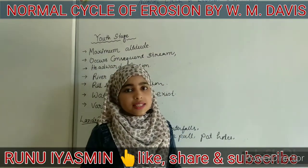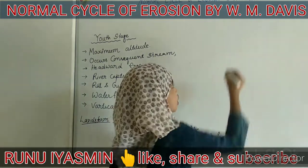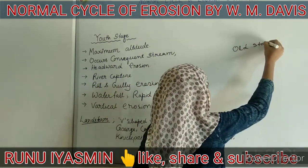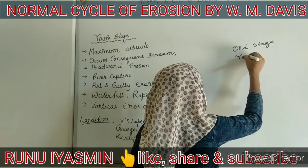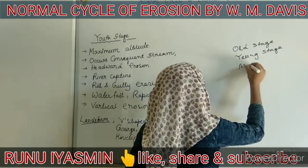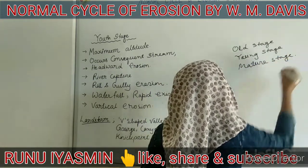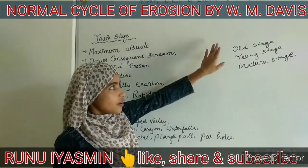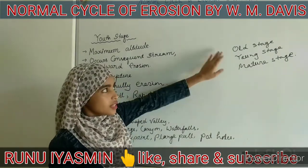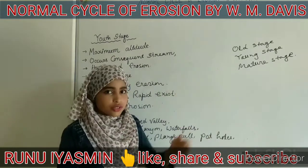The famous geologist W.M. Davis divided the stages into three groups: the old stage, young stage, and mature stage. We will be discussing these three stages, their characteristic features, and the landforms being produced in each of these three stages.